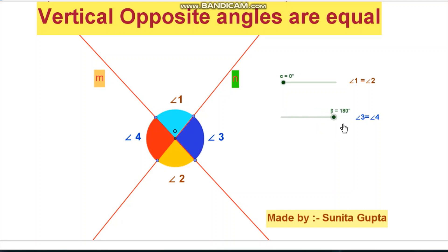Hence, when two lines intersect at a point, the vertical opposite angles so formed are equal.